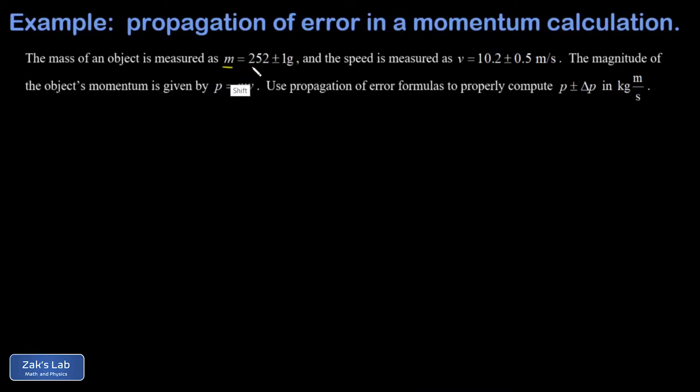In this problem we're given the mass of an object in grams and the speed of the object in meters per second. Both of these come with uncertainty, and we're trying to compute the momentum of the object, which is the mass times the speed. We want to get that in kilogram meters per second with the uncertainty computed using a propagation of errors formula.